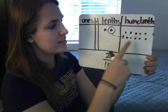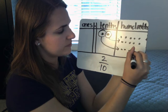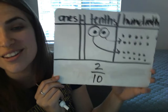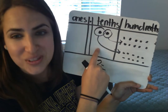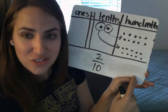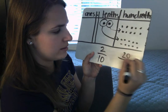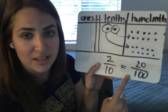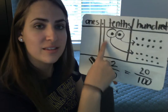So one tenth is ten hundredths. I'm going to take my other tenth and decompose it into ten hundredths. Now that I decompose my two tenths into hundredths, how many hundredths do I have? You're right, I have twenty hundredths. Now we know that two tenths is equivalent to twenty hundredths. We didn't change the value, we just decomposed our tenths into hundredths.